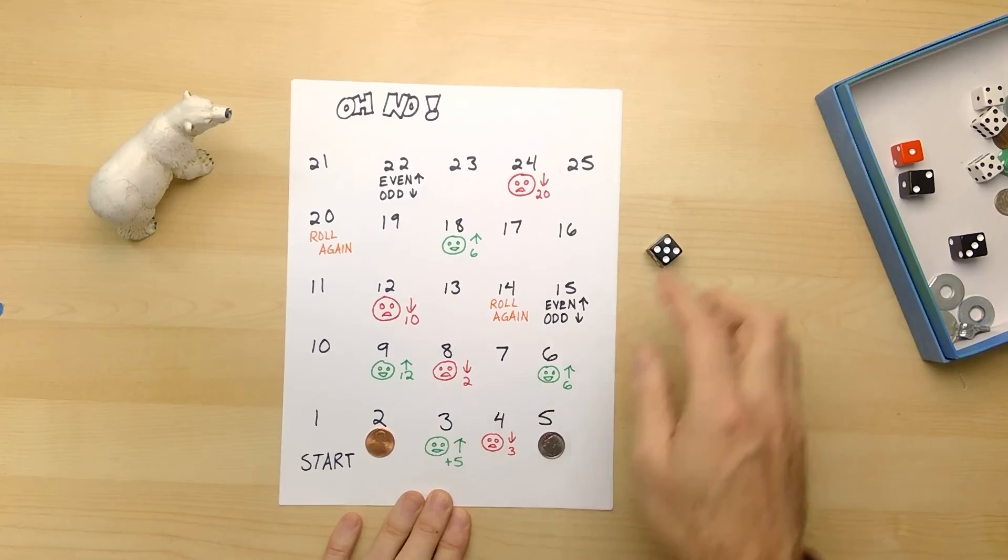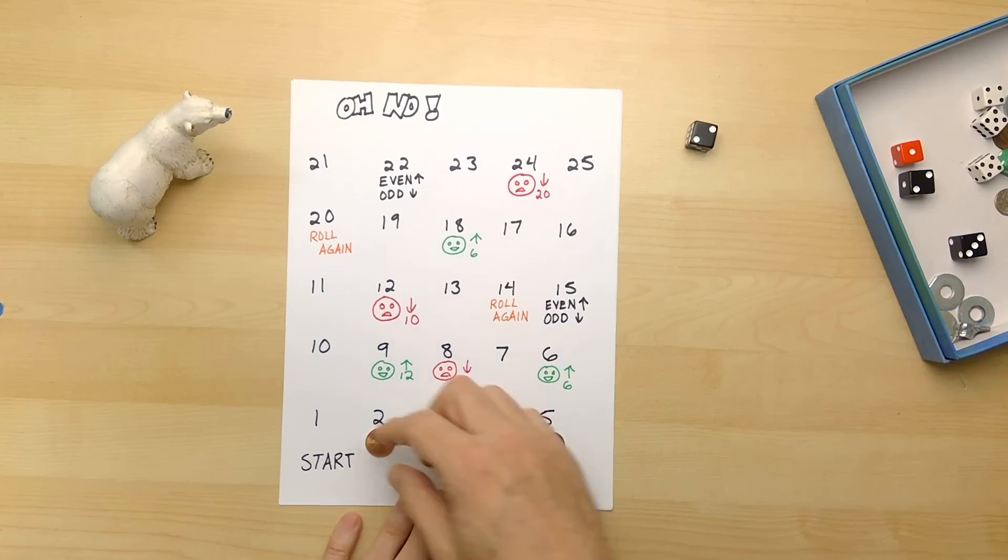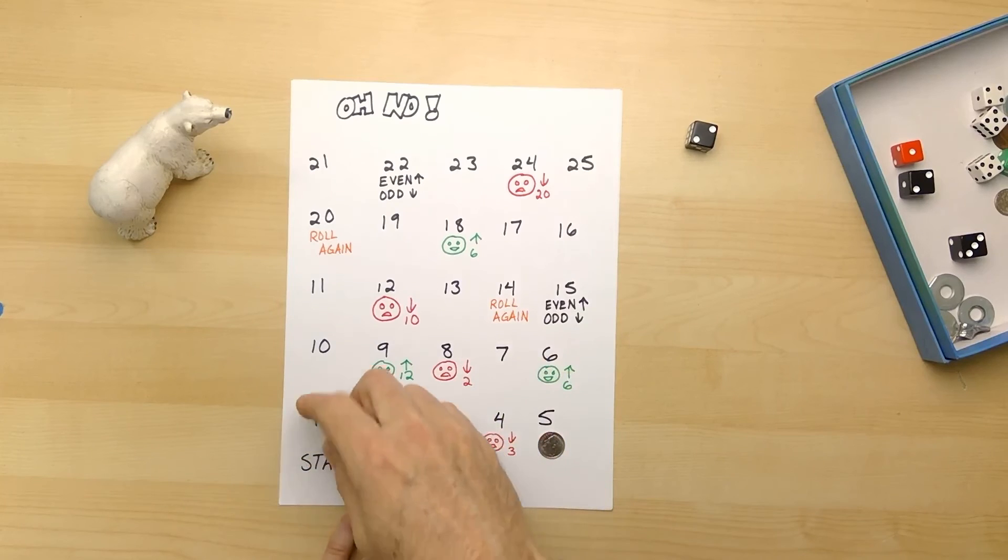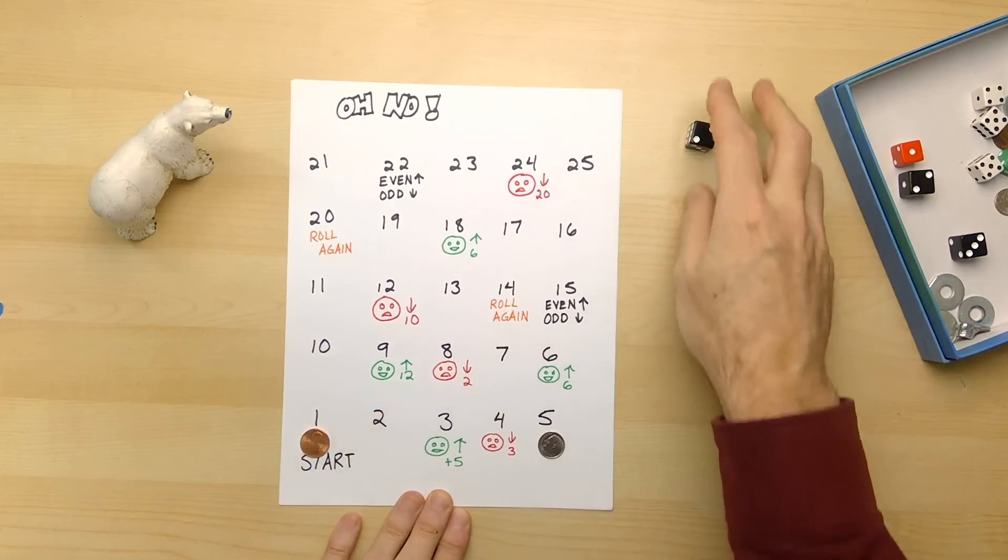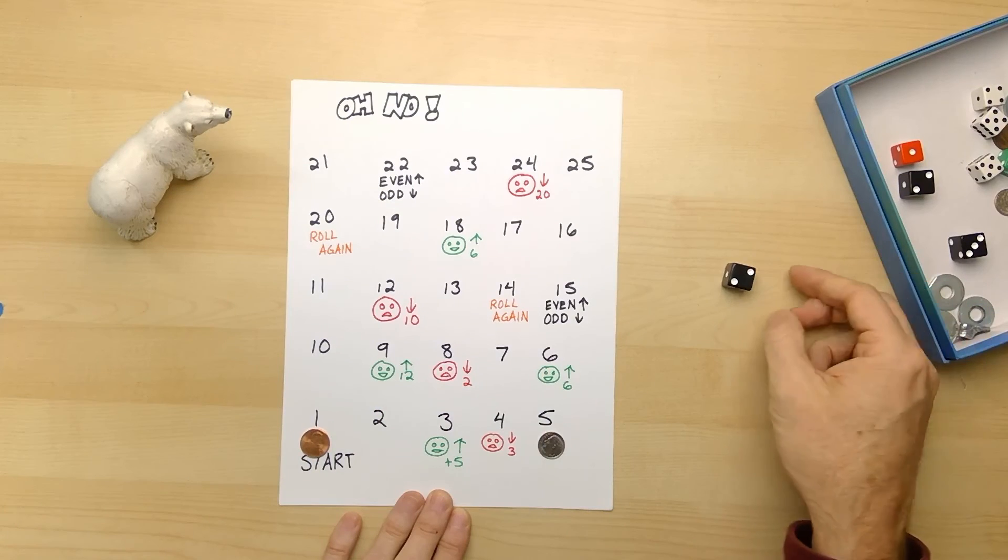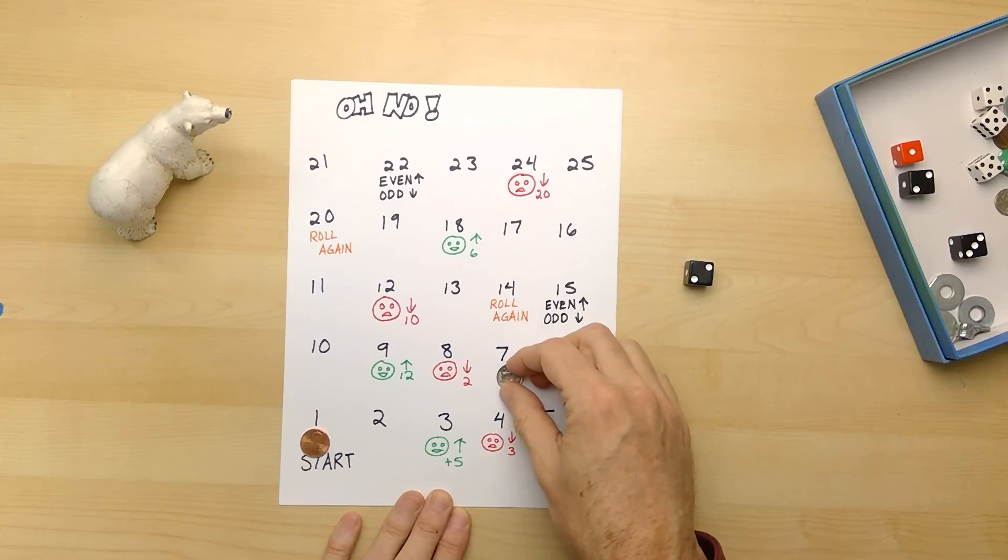Now it's copper's turn, and copper rolls a two - one, two. Go backwards three - one, two, three, all the way back to the one. Silver's turn, silver rolls a two - one, two. And silver gets the seven.